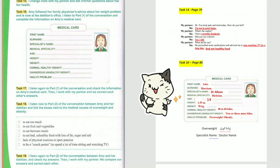First name: Their name, Morshan. Specialist name or doctor's name: Dr. Allison. Medical specialty: Dietitian. Age: 14 years old.